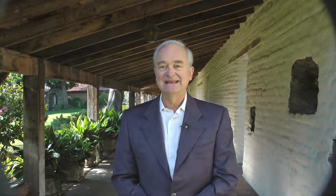Here is an example of a very simple profit and loss of a fictitious company called Echo Shoes. In the top part, flowing down, are the normal generally accepted accounting principles for how you might record both revenue and the costs of producing that revenue, whether it's a product, service, distribution, or retail.